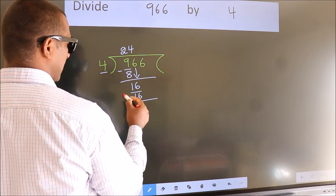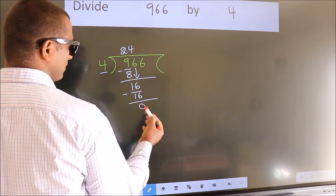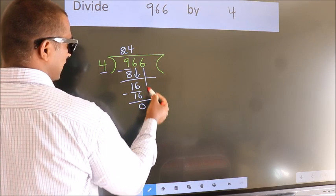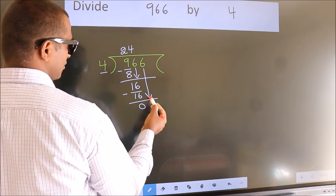Now, we subtract. We get 0. After this, bring down the beside number. So, 6 down.